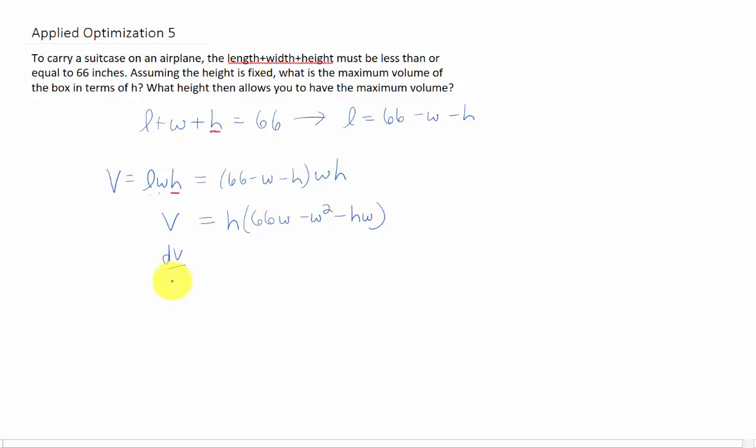So let's rewrite this with that constant h out front, and I'm going to distribute the w through these parentheses. Let's take a derivative of this volume with respect to the variable which is w. Since h is a constant, it can stay out front. The derivative of 66w is just 66. The derivative of w squared is 2w. The derivative of hw, keeping in mind that h is a constant just like 66 is, is just h.